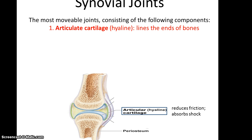Now moving on to synovial joints — again, these are the most movable joints. Pretty much when we think of a joint, we're thinking of a type of synovial joint. One of the many features of a synovial joint is the articulating cartilage, which is made of hyaline. This cartilage lies at the ends of every bone that's going to be articulating to form a synovial joint, and its goal is to help reduce friction and also to help absorb some shock. It is somewhat continuous with the periosteum.